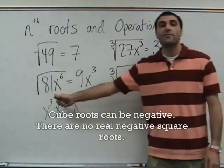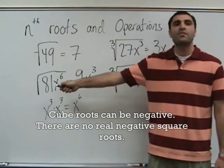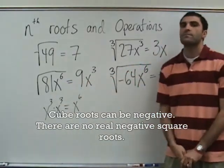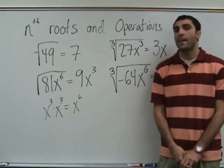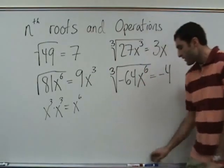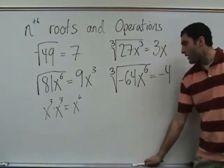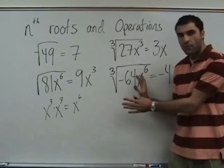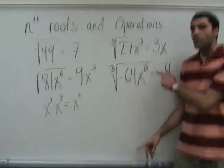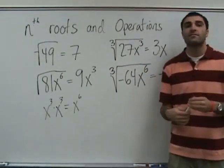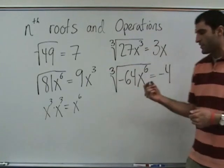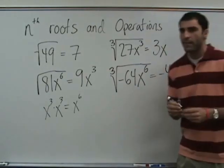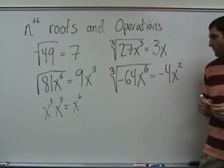Can you have square roots of negative numbers? No — because a negative times a negative is a positive, so you can't get a negative square root. The cube root of x to the 6 is x squared. Questions about this? x squared.